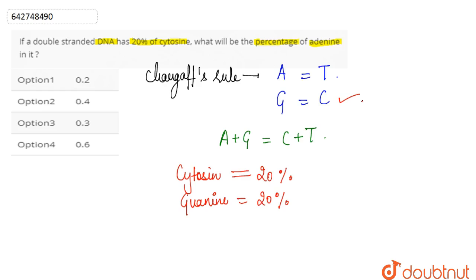So A and T, A plus T, must be 60 percent. Because if C plus G is 40 in total, and C equals G, then A plus T has to be 60 percent.